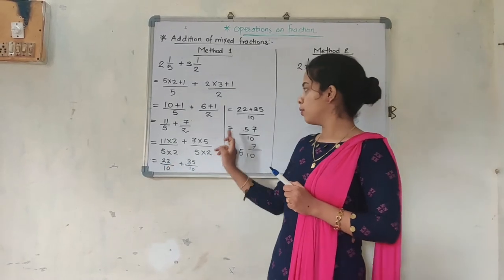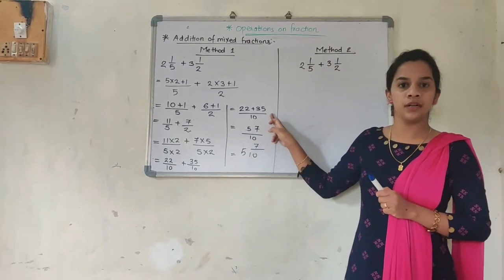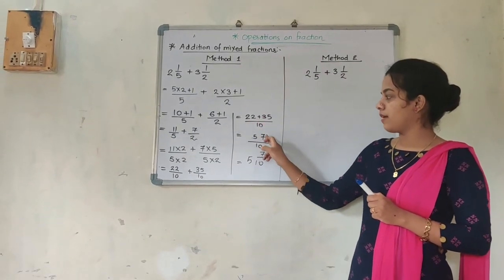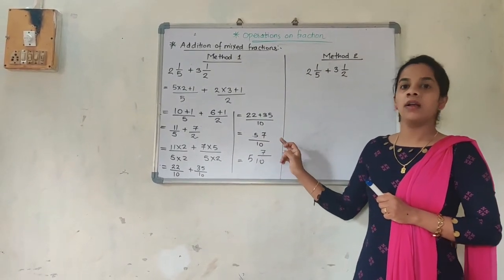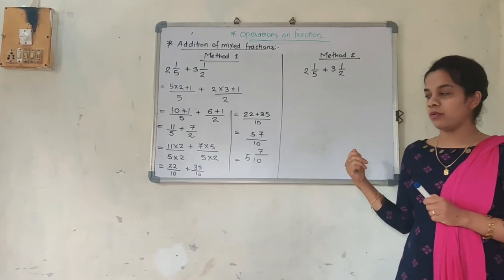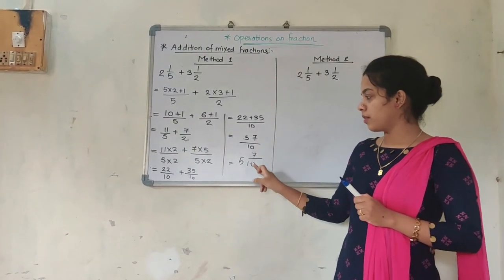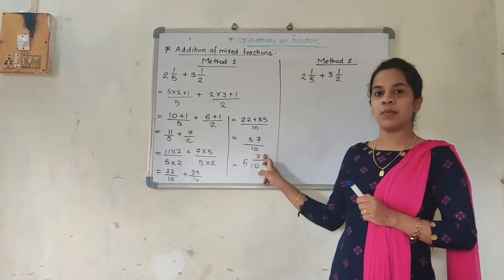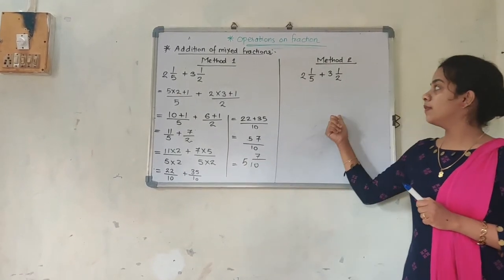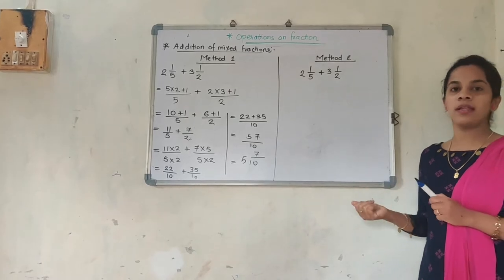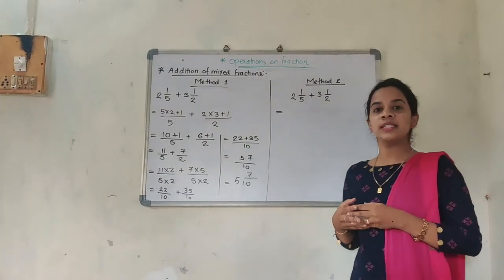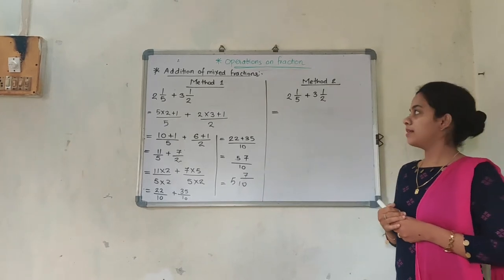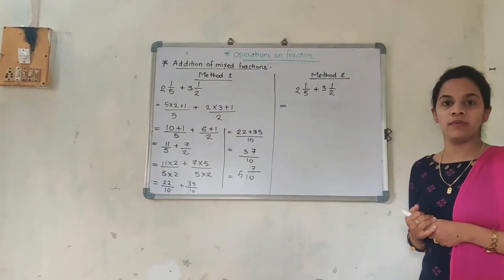Now we will solve the same question by the second method. The same question: 2 and 1/5 plus 3 and 1/2. Always remember: 2 and 1/5 can be separated into integer and fractional parts. So how am I going to write this? 2 plus 1/5, plus 3 plus 1/2.